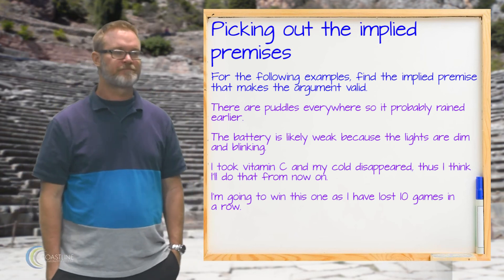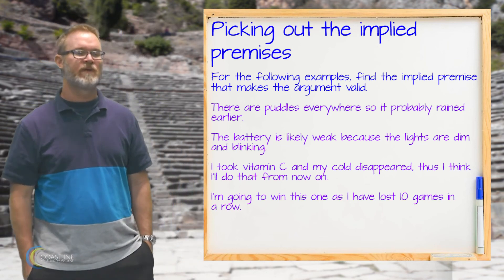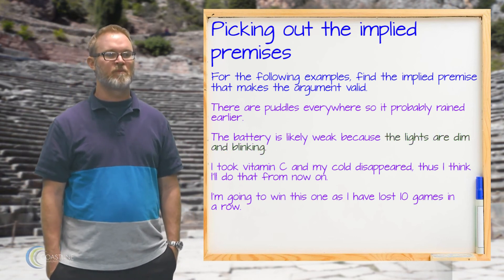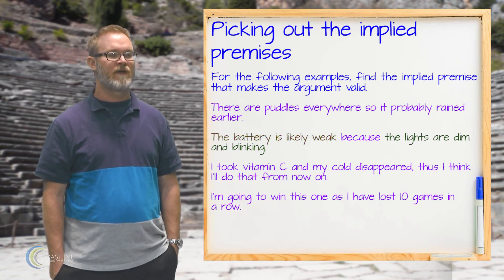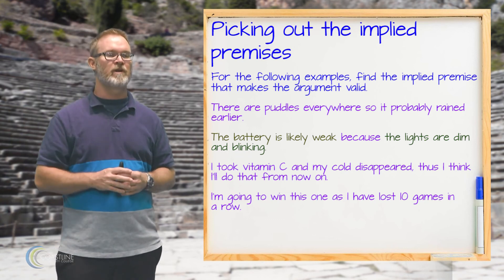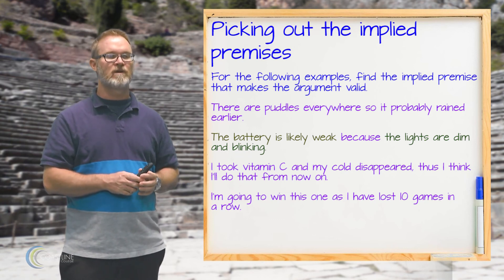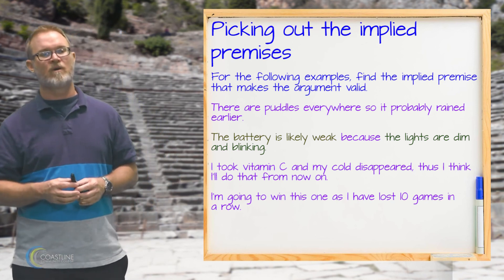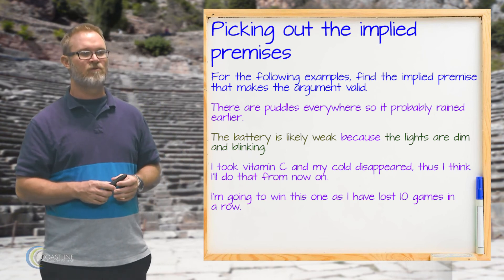Next: the battery is likely weak because the lights are dim and blinking. The reason is that the lights are dim and blinking, and the conclusion is that the battery is likely weak. What we need is something that makes the conclusion more probable, like: in most cases, or usually, when the lights are dim and blinking, the battery is weak.